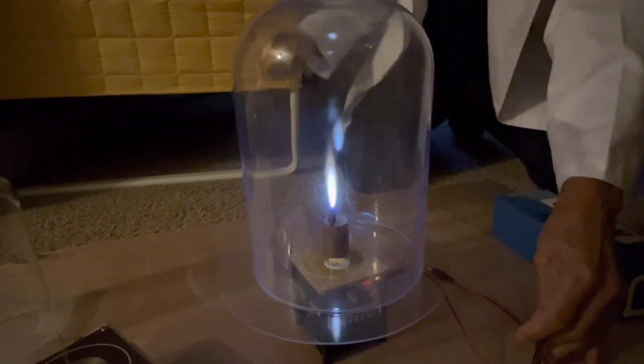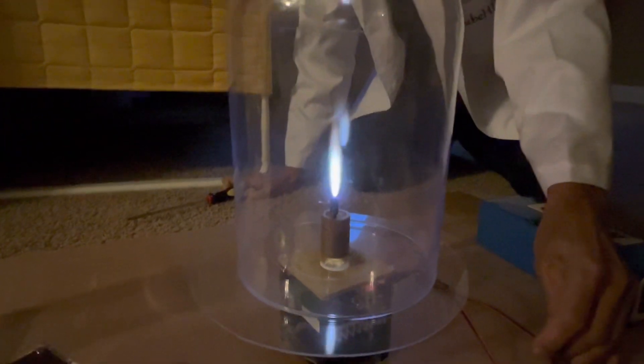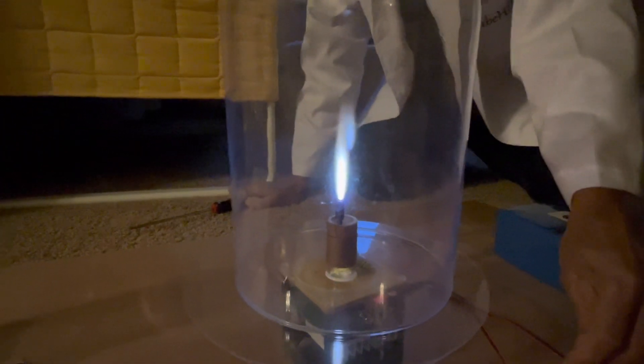First of all, we're going to light this Tesla candle flame which is operating at 16.5 megahertz. Here it goes. This is in regular air. As you can see, it burns pretty smoothly.